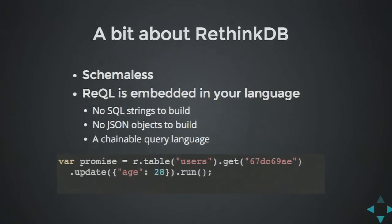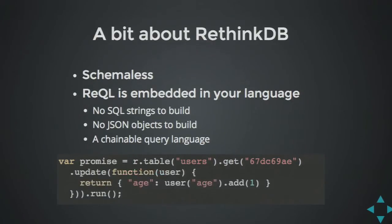For example, here I just get all my users, get one of them with a specific ID, and update the age by passing the field age with a value of 28. What's really cool too is that it gets all the power from JavaScript — it can take a function to update. So if you want to increment the age of a user, you can just pass a function. The function gets serialized and sent to the server, which does the work and sends back what you want.